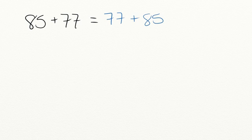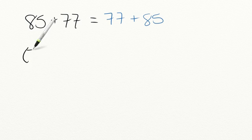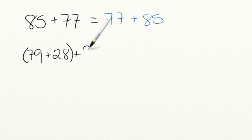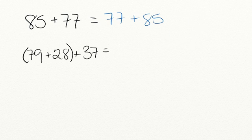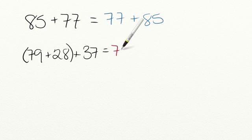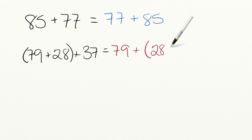Let's try another problem using the associative property. Finish the second half of this equation: 79 plus 28 plus 37. Using A plus B plus C equals A plus (B plus C), we can write this as 79 plus (28 plus 37). Great job!